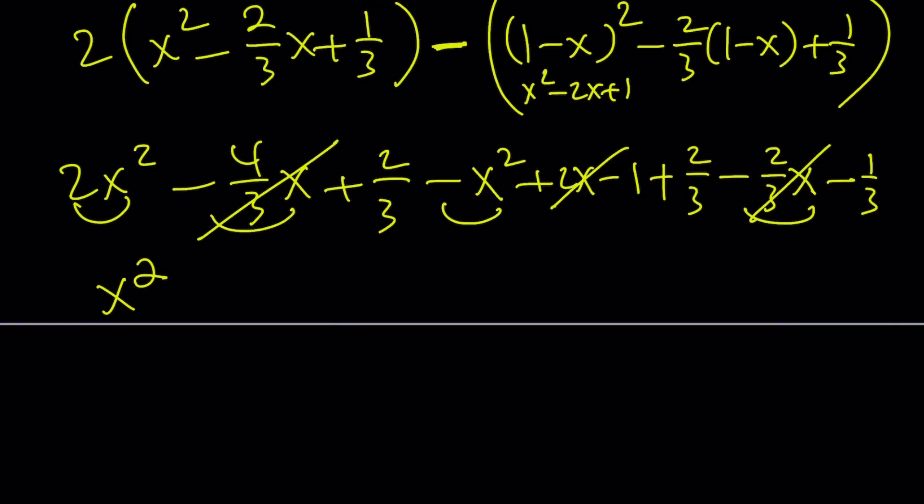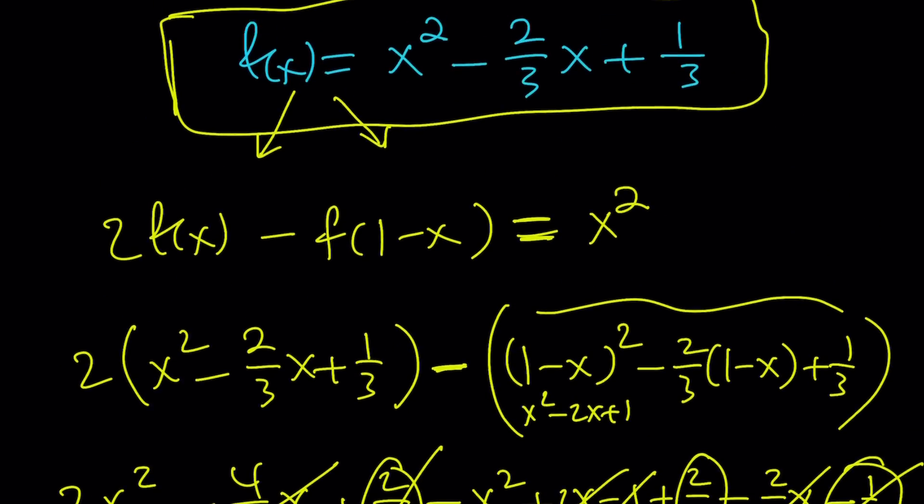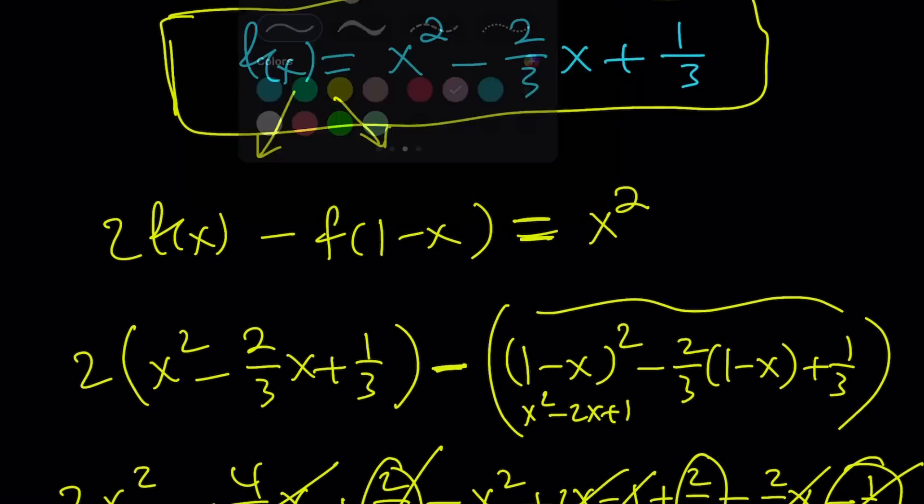We got 2/3 plus 2/3, which are 4/3. 4/3 minus 1/3 is 3/3, which is negative positive 1. Positive 1 and negative 1 are also going to cancel out. So we got rid of the constant too, and we only end up with x² at the end, which is what we're supposed to have on the right-hand side.